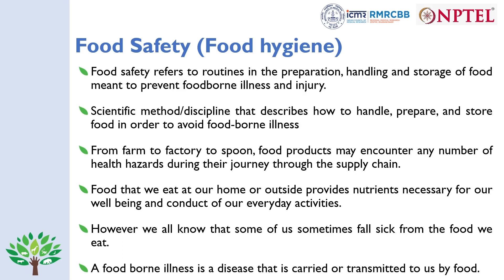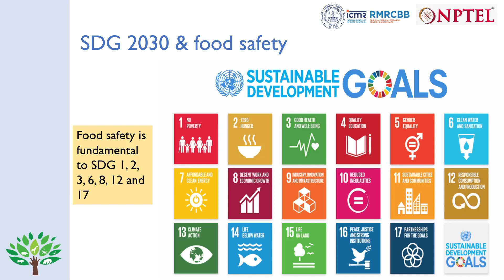The Sustainable Development Goals of 2030 by the United Nations consist of 17 goals that are a blueprint to achieve a better and more sustainable future for all, calling for action by all countries — poor, rich, and middle income — to promote prosperity while protecting the planet. Food safety is fundamental to SDG 1 (no poverty), 2 (zero hunger), 3 (good health and well-being), 6 (clean water and sanitation), 8 (decent work and economic growth), 12 (responsible consumption and production), and 17 (partnerships for the goals). Any compromise of food safety and hygiene will compromise the Sustainable Development Goals set by the United Nations.